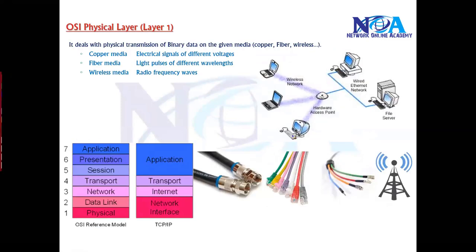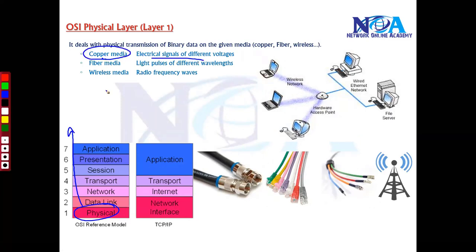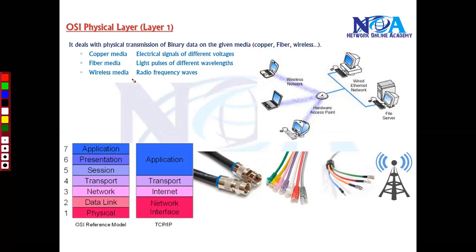If we go with the basics in the OSI model, there is something called a physical layer. This physical layer defines the actual transmission of your data over the transmission media. If you're using copper cables, the data is converted into electrical signals. If you're using fiber media, the information is converted into light signals. Here we'll be discussing the wireless media, where information goes through the air and is sent in the form of radio frequency signals or radio frequency waves.